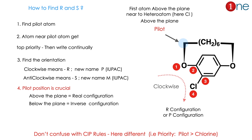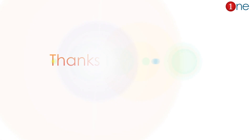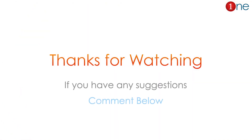The important thing you should know is: don't confuse this with the CIP rule — it is totally different here. The priority is that the pilot atom always gets the highest priority over chlorine or any other hetero atom. Thanks for watching. If you have any suggestions, comment below.